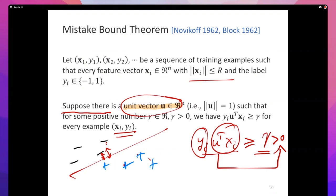It may seem like I'm throwing notation at you unnecessarily, but this middle block is simply saying: there's a data set, it's linearly separable by some hyperplane whose weight vector is u. Without loss of generality I'm calling it a unit vector — I'm just dividing by the norm. I take the unit normal for that hyperplane, and ask: what is the data point closest to the hyperplane? The distance of that is γ. So every other point is at a distance of at least γ.